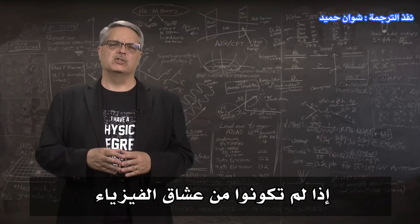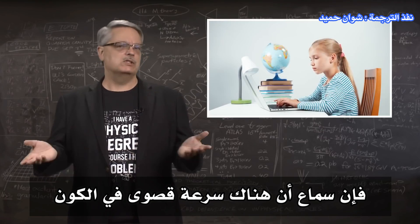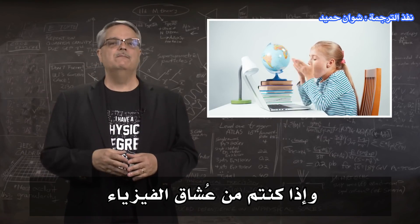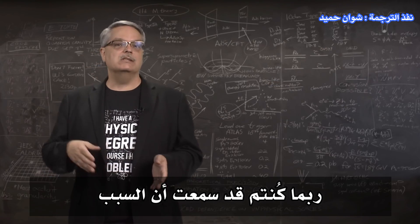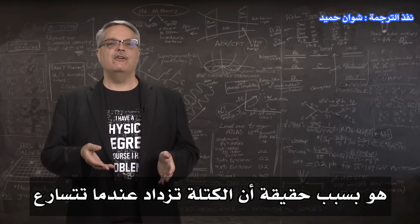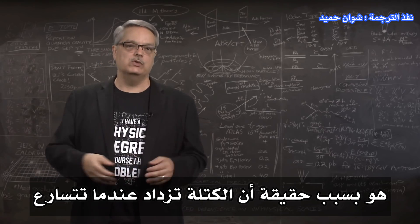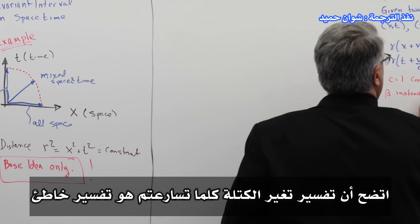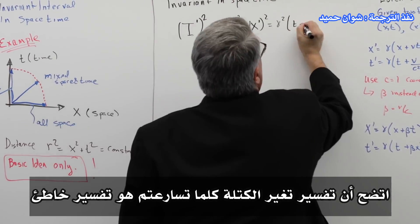If you're not a physics groupie, hearing there's a maximum speed in the universe might surprise you, but it's true. And if you are a groupie, you've probably heard the reason you can't go faster than light is because mass increases when you speed up.